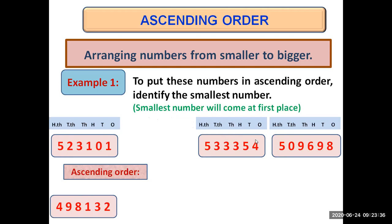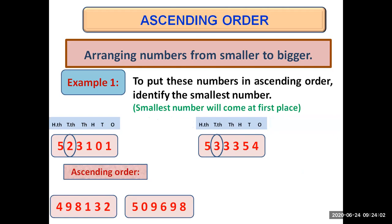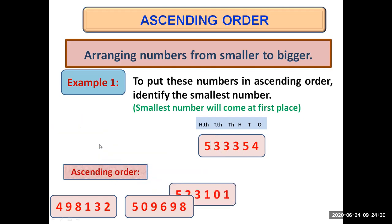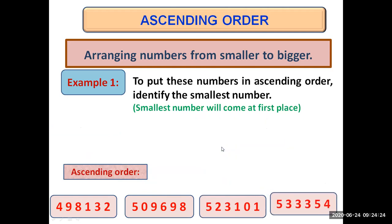Now we are left with three numbers, and at 100,000 all of them have five. So we go to the 10,000 place. The first number has two, the next has three, and the last number has zero at its 10,000 place. Zero is the smallest, so that one comes at second place. Of the remaining two, the first has two and the other has three at 10,000 place — two is smaller, so that number comes at third place. The remaining number goes at last place. The numbers are now arranged in ascending order.